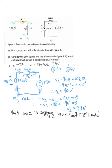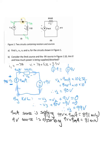We now have to work out whether the 9 volt source is supplying or absorbing. We see that the 9 milliamp current is flowing from the higher voltage to the lower voltage, so we know that the 9 volt source is absorbing power. The 9 volts times 9 milliamps is equal to 81 milliwatts.